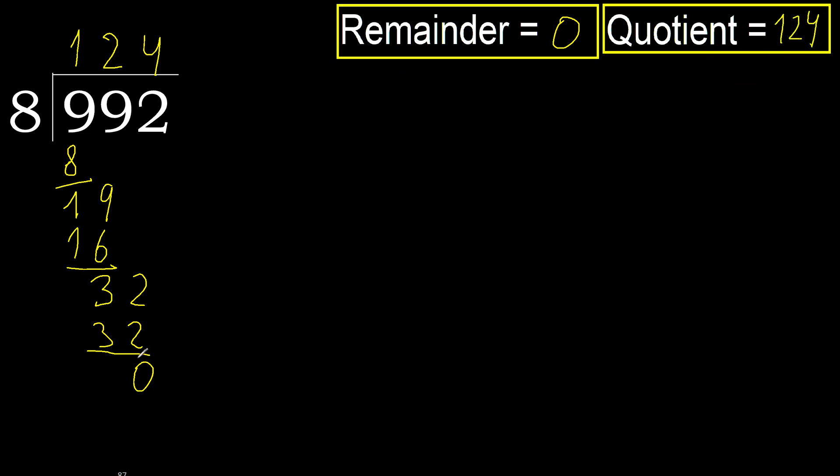Ok, remainder 0. Therefore 992 divided by 8 is here.